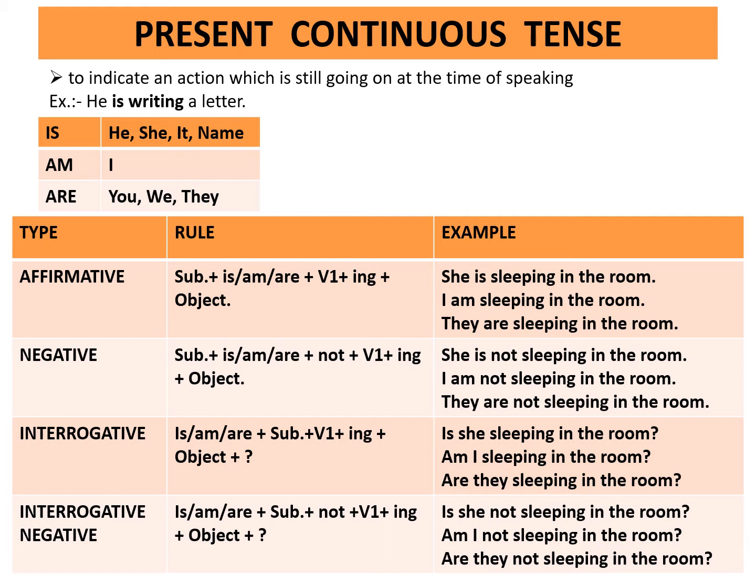Interrogative negative rule: is or am or are plus subject plus not plus first form of the verb plus ing plus object plus question mark. Example: Is she not sleeping in the room? Am I not sleeping in the room? Are they not sleeping in the room?